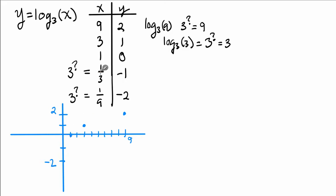X = 1/3, pretty close to the Y-axis with a resulting Y value of negative 1. And X = 1/9, Y value of negative 2, even closer to the Y-axis.